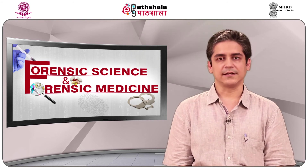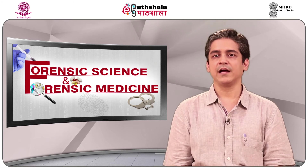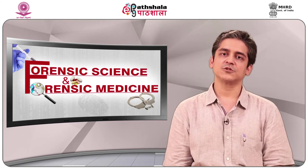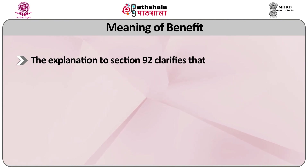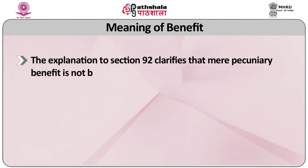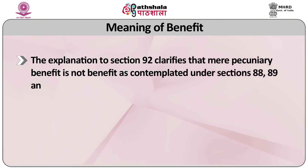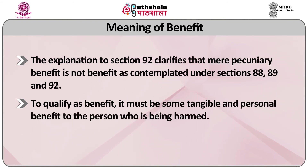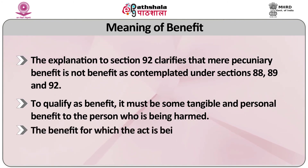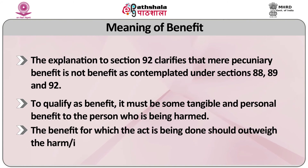Because these earlier exceptions are based on the idea of the act being for the benefit of a person, it's also important for us to understand what is meant by benefit. The explanation to section 92 clarifies that mere pecuniary benefit is not benefit as contemplated under sections 88, 89, and 92. To qualify as benefit, it must be some tangible and personal benefit to the person who is being harmed. The benefit for which the act is being done should outweigh the harm or injury which is being inflicted.